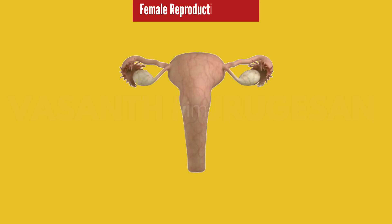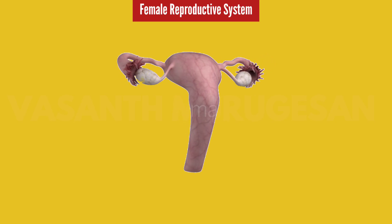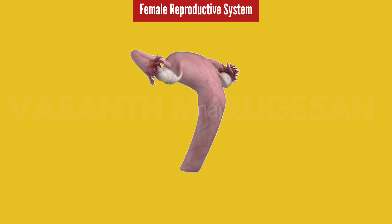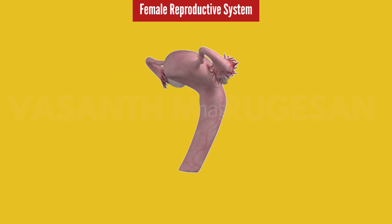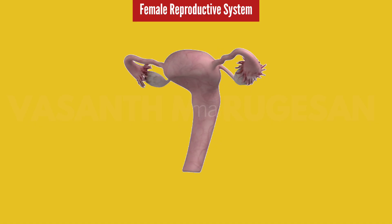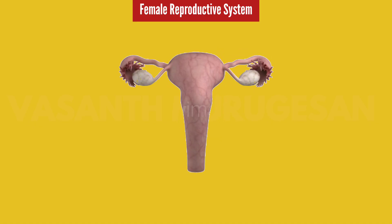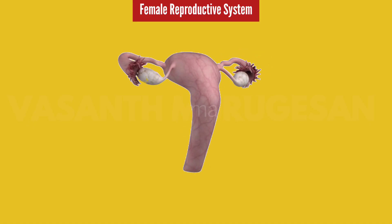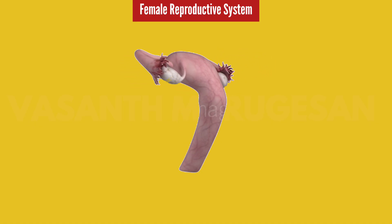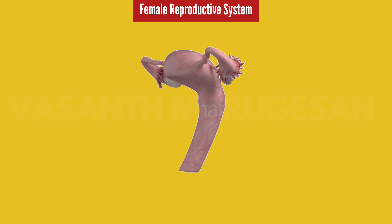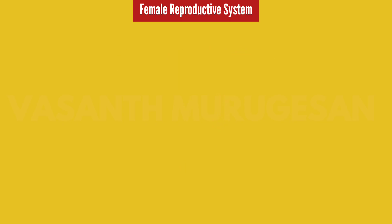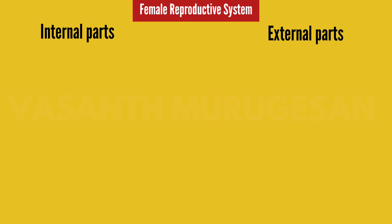Hello everyone. In this video we will talk about the Female Reproductive System. This is Anatomy and Physiology. Anatomy of the Female Reproductive System can be learned in two parts: Internal Parts and External Parts.